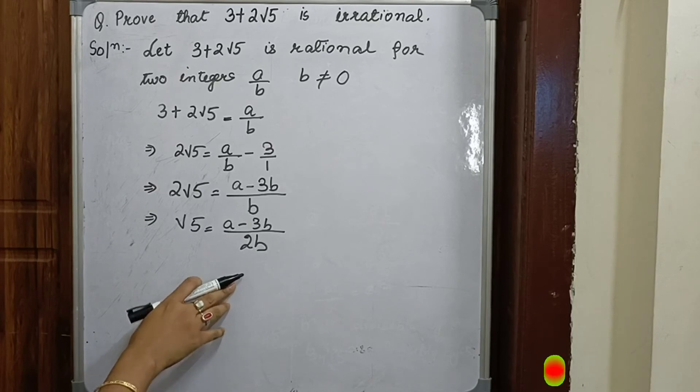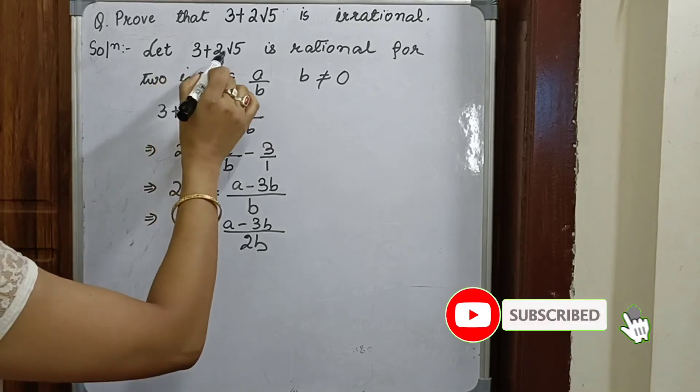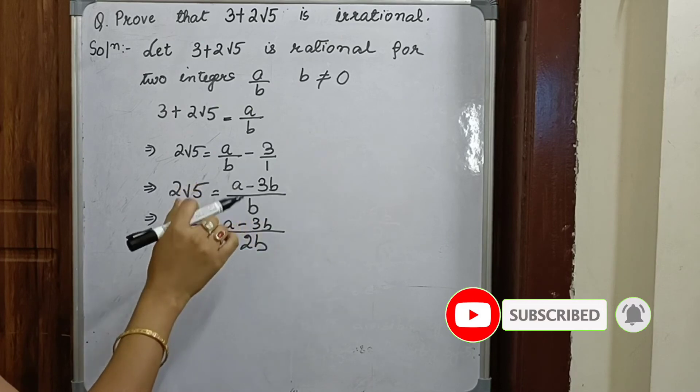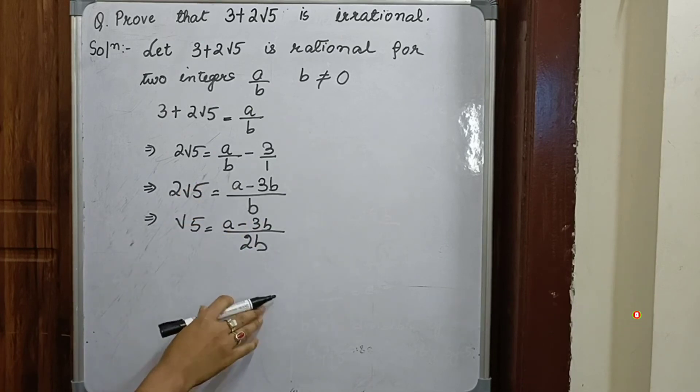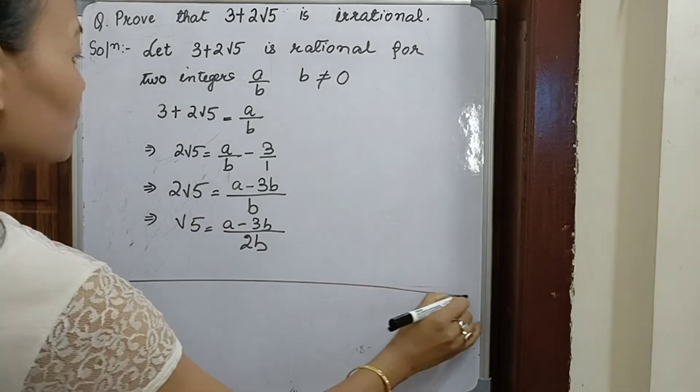Which proves itself that 3 plus 2 root 5 is irrational. If it is rational, it will have a common factor 1. So I hope this question is clear to you.